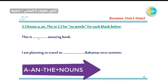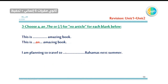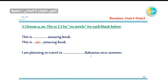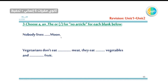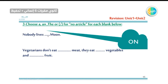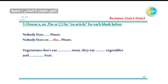Number one: 'This is amazing book.' Book is singular and unknown, and we have 'amazing.' So: an amazing book. Without 'amazing,' you would say 'a book.' Number two: 'I'm planning to travel to the Bahamas next summer.' Bahamas are plural islands — we use 'the.' Number three: 'Nobody lives on moon.' Everyone knows the moon — it's already known. Nobody lives on the moon.